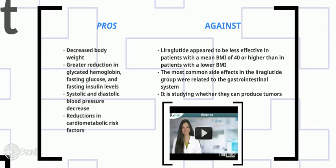Liraglutide appears to be less effective in patients with a baseline BMI of 40 or greater than in patients with a lower BMI. The most common side effects with liraglutide were related to the gastrointestinal system, and studies are examining whether it could produce tumors.